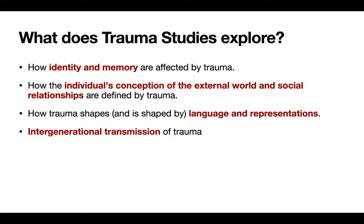Motherhood and trauma — how grandmothers, mothers, and daughters are depicted in women's writing, such as in Anita Desai, Shashi Deshpande, or Western women writers. For example, Difficult Daughters by Manju Kapoor is one example of intergenerational transmission of trauma. Binding Wine is another example.